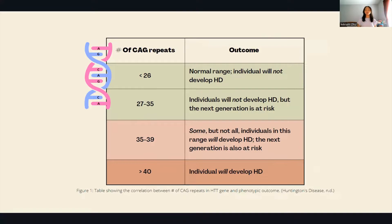but their offspring can, because through the process of meiosis and fertilization the number of repeats can increase, and then the child will develop Huntington's.